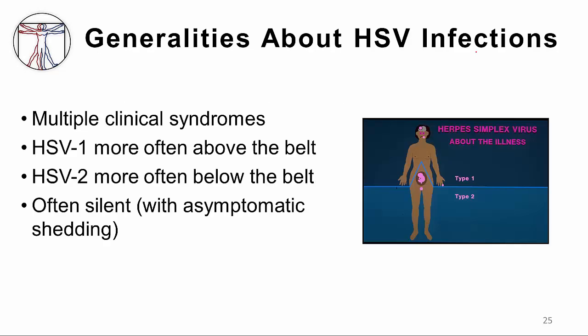First, some generalities about HSV infections. They cause a multitude of clinical syndromes. In general, HSV type 1 causes infections above the belt and HSV type 2 causes infections below the belt. The infections are often silent — you may not see any clinical signs of infection, but the infected individual is shedding virus and potentially infecting others.